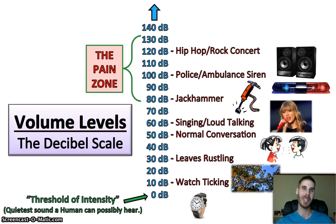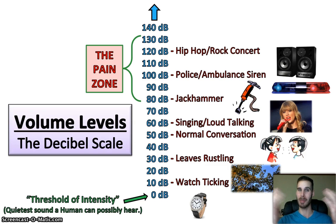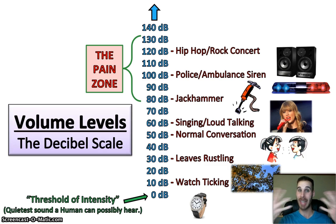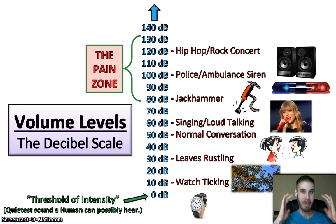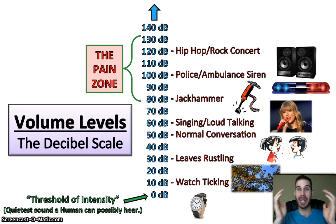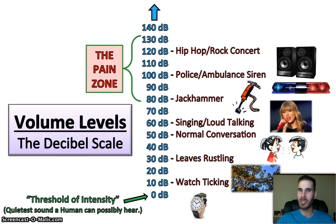What would be 120 decibels? Well, that would be like if you were in the front row of a rock concert, a rap concert, or some really loud live performance — probably not a classical music concert, but any other concert you can imagine. Being right up front is going to be about 120 decibels. People who have been to concerts may know that because of so much loud noise, your ears are going to be affected — maybe permanently, maybe not. If you've left a concert and your ears have been ringing afterwards, that's because of damage caused by those speakers.